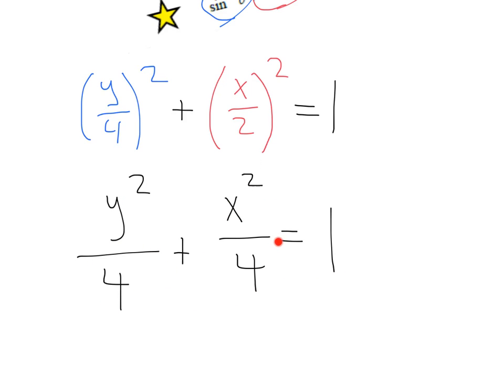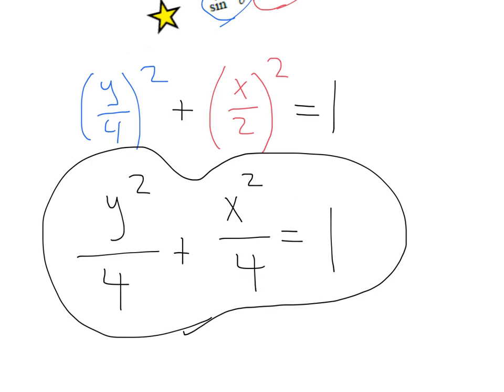And since this is an equation of ellipse, we can just go ahead and leave it like this. We don't need to put it in y equals form. We've got the rectangular form of our original sine cosine equations. Thank you very much.